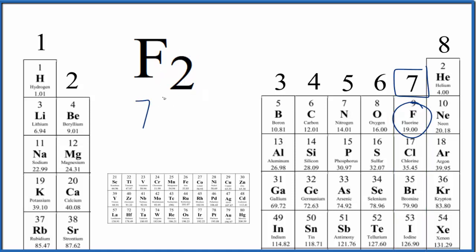Seven, we have two fluorine, so seven times two, that gives us 14 valence electrons for the F2 Lewis structure.